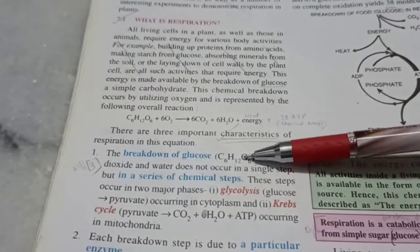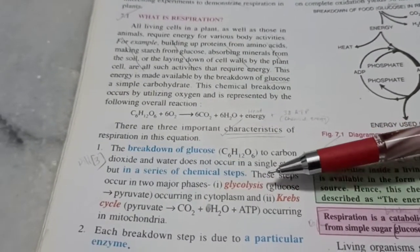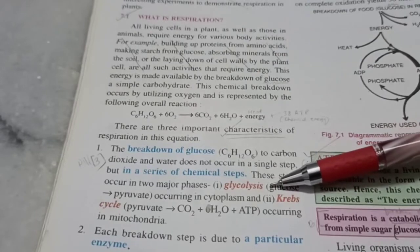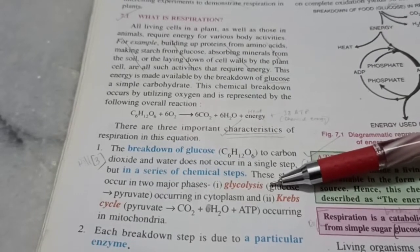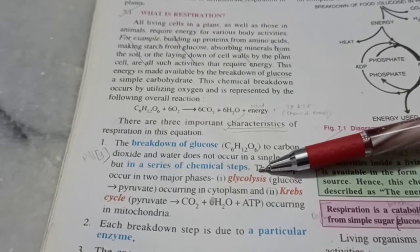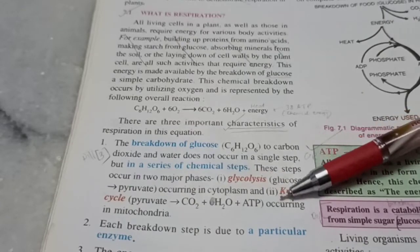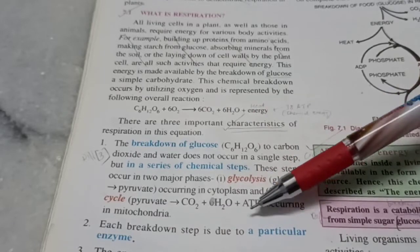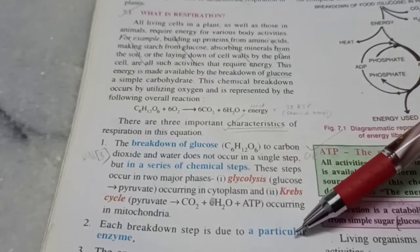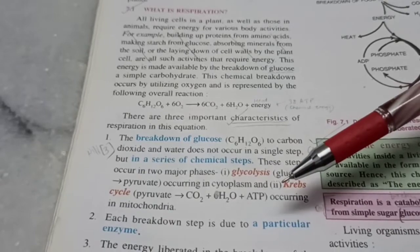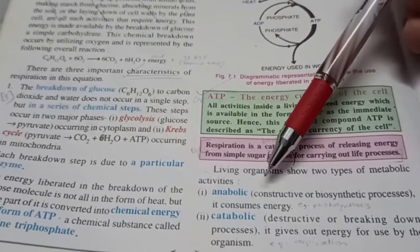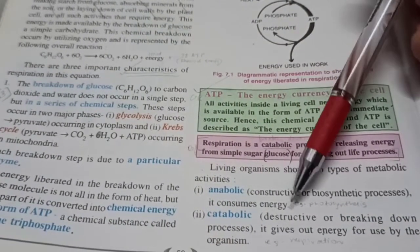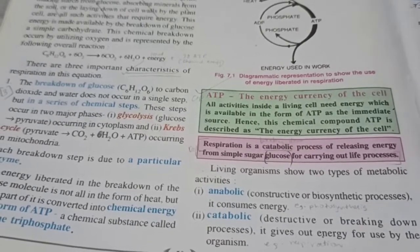Here, we have differentiate between glycolysis and Krebs cycle. Location is different and the end products are different. And remember that the equations I showed was a very simplified version. The actual process is very long and complicated. And each breakdown is due to a particular enzyme, which we don't have to learn in school level. Here, we also learn the difference between anabolic and catabolic processes, which are opposite to each other.